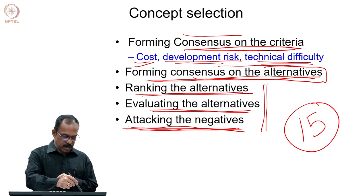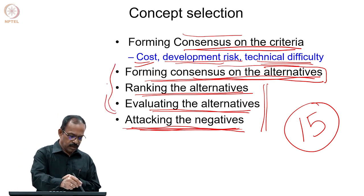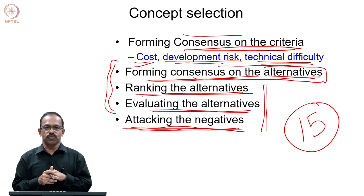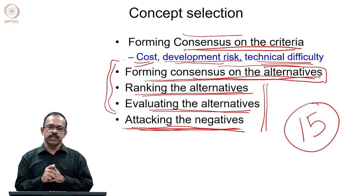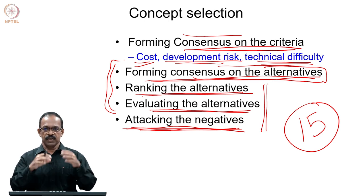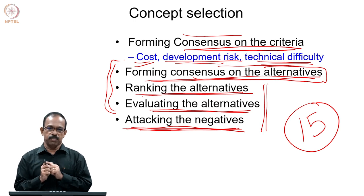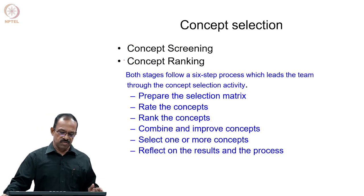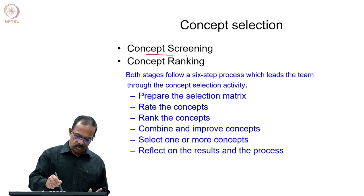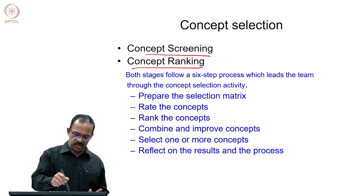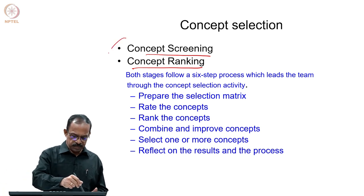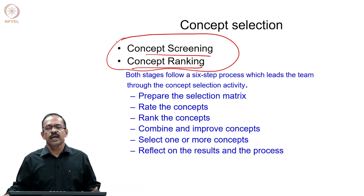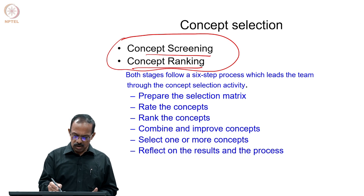It is not only ranking the alternatives and going through the ranks, but also attacking the negatives. When you have a large number of alternatives, you need to quickly bring it to a smaller number. We go through two stages: these are concept screening and concept ranking or concept scoring. In concept screening, the process brings down the large number to a smaller number for better analysis. In concept ranking or scoring, we do a more objective evaluation of the smaller set.